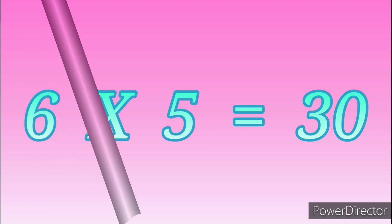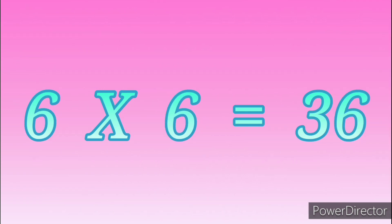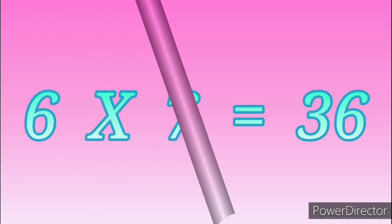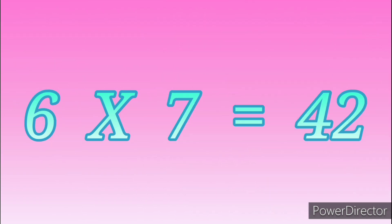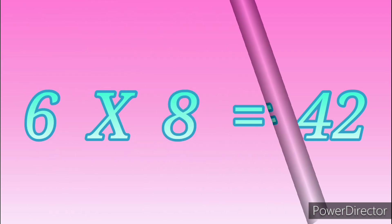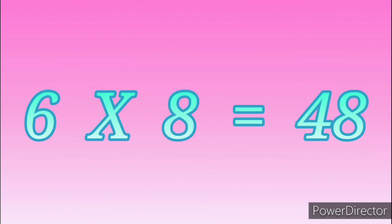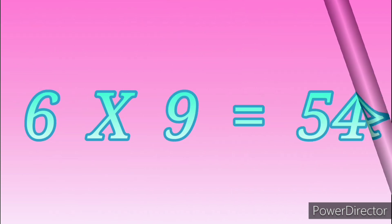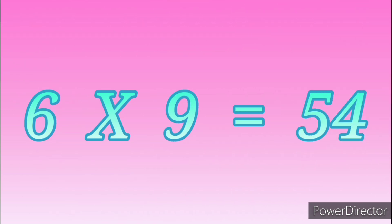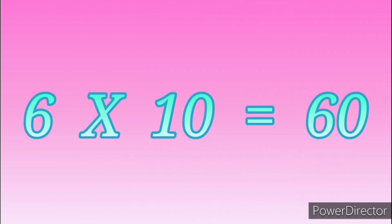Six sixes are thirty-six. Six sevens are forty-two. Six eights are forty-eight. Six nines are fifty-four. Six tens are sixty.